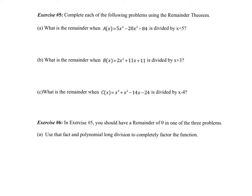Before we do the remainder theorem, the only way to do this problem was to actually do the division. So that would mean dividing this function, 5x^4 - 20x^2 - 84, by x + 5. Now that's even more complicated than it seems because I would have to add those placeholders for x^3 and x, which are not in the function, and divide by x + 5. So a pretty lengthy process.